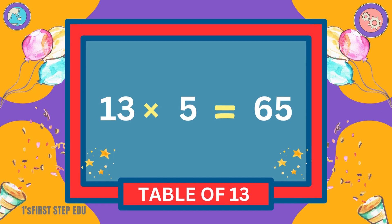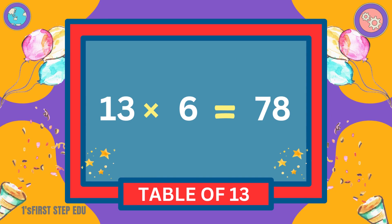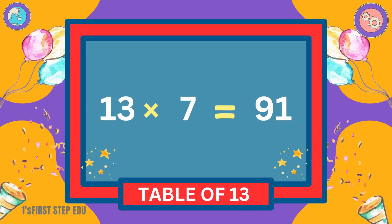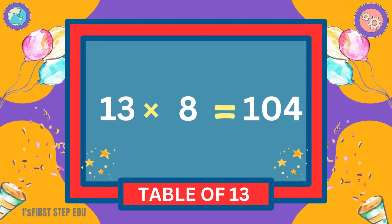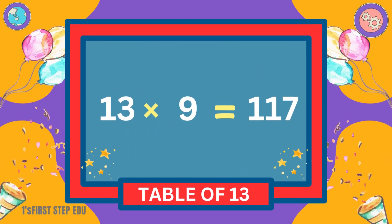13 fives are 65. 13 sixes are 78. 13 sevens are 91. 13 eights are 104.